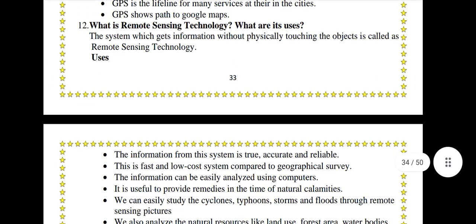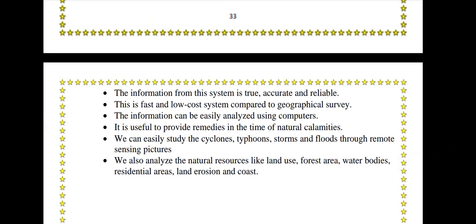What is Remote Sensing Technology and what are its uses? The system which gets information without physically touching the object is called Remote Sensing Technology. Uses: The information from this system is true, accurate and reliable. This is a fast and low-cost system compared to geographical survey. The information can be easily analyzed using computers. It is useful to provide remedies in the time of natural calamities. We can easily study cyclones, typhoons, storms and floods through remote sensing pictures. We can also analyze natural resources like land use, forest area, water bodies, residential areas, land erosion and coastlines.